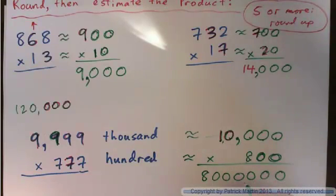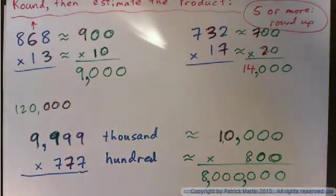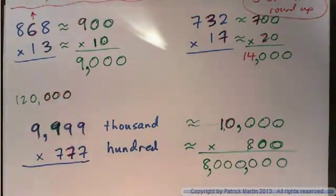And then what do you end up with? You go one, two, three, comma, one, two, three, comma, and that is what? What's that number? Six zeros on the end of it. That is eight million. Eight million. Okay, thank you.